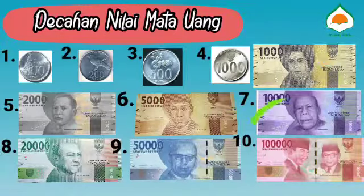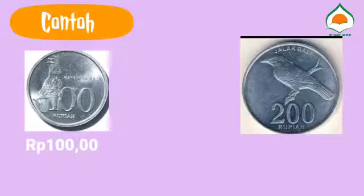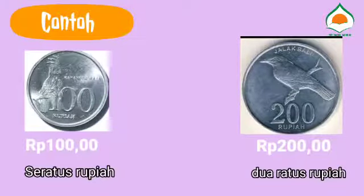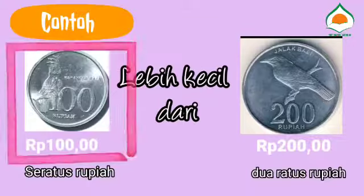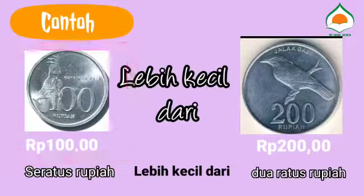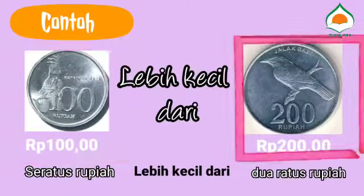Yang kesembilan 50.000 rupiah, dan yang terakhir 100.000 rupiah. Inilah urutan pecahan nilai mata uang dari yang terkecil sampai yang terbesar. Perhatikan contoh yang pertama: uang 100 rupiah dengan uang 200 rupiah. Jadi uang logam dengan nilai 100 rupiah lebih kecil dari uang logam dengan nilai 200 rupiah.